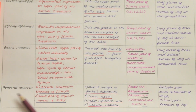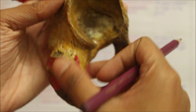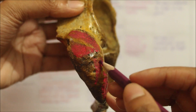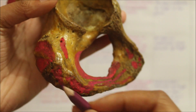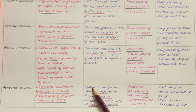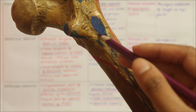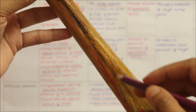Moving on to the last muscle, we have the adductor magnus. It originates from the inferolateral part of the ischial tuberosity, the ramus of the ischium, and the lower part of the inferior ramus of the pubis. The adductor magnus inserts into the medial margin of the gluteal tuberosity, the linea aspera along its length, the medial supracondylar line, and finally the adductor tubercle.